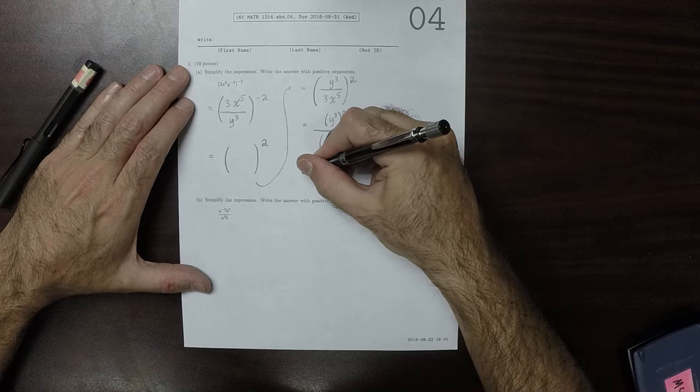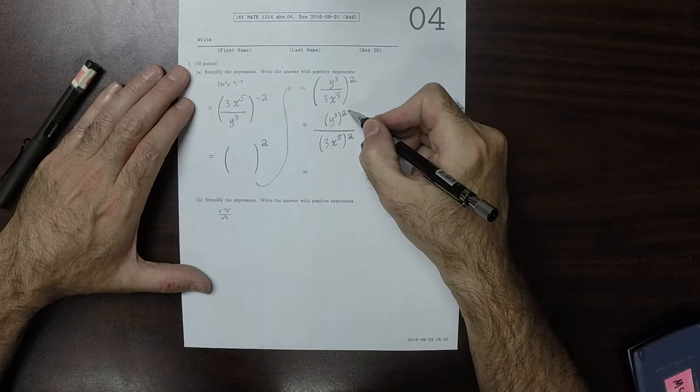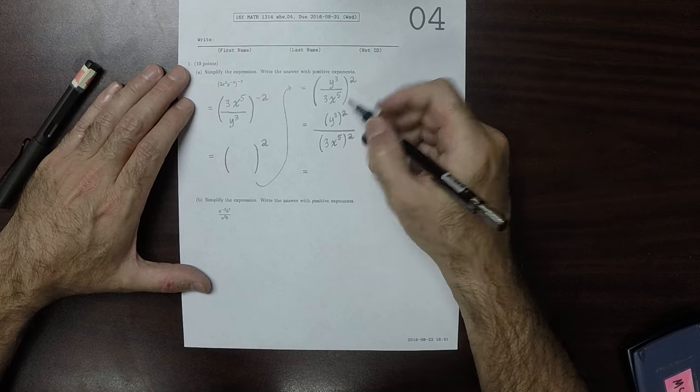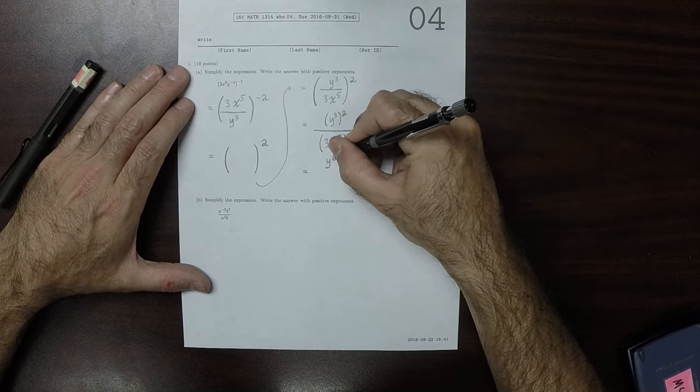So, y cubed squared, that's iterated exponents. The way you combine iterated exponents is with multiplication. So, this numerator is y to 6.